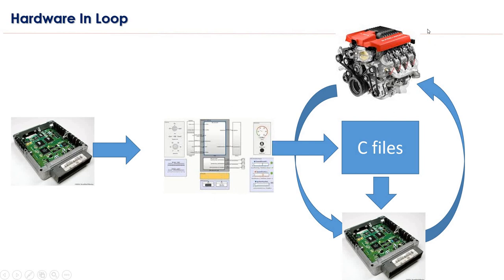The model is developed in the simulation tool and deployed into the host machine, which runs the plant model. That plant model is in loop with the ECU, simulating the vehicle environment. The input to the ECU comes from this plant model, and the output of the ECU goes back to the plant model — keeping it in loop with the automotive system. That is why it is called an HIL system: hardware in the loop. The hardware can be an ECU, an engine, a braking system, or any kind of automotive system.